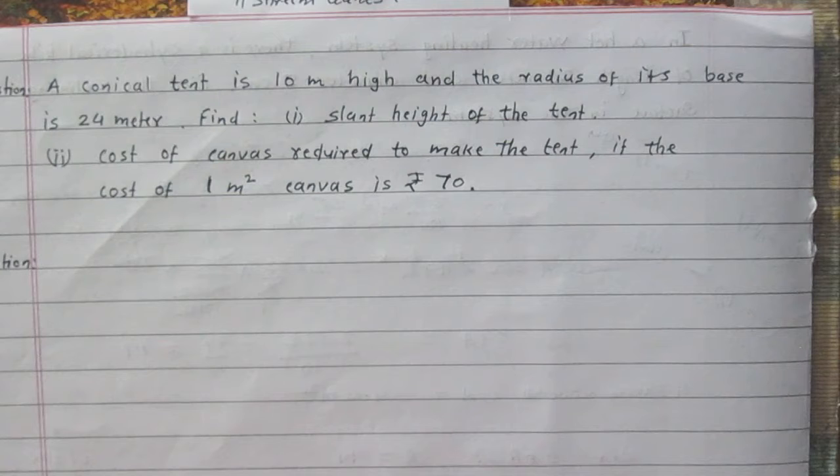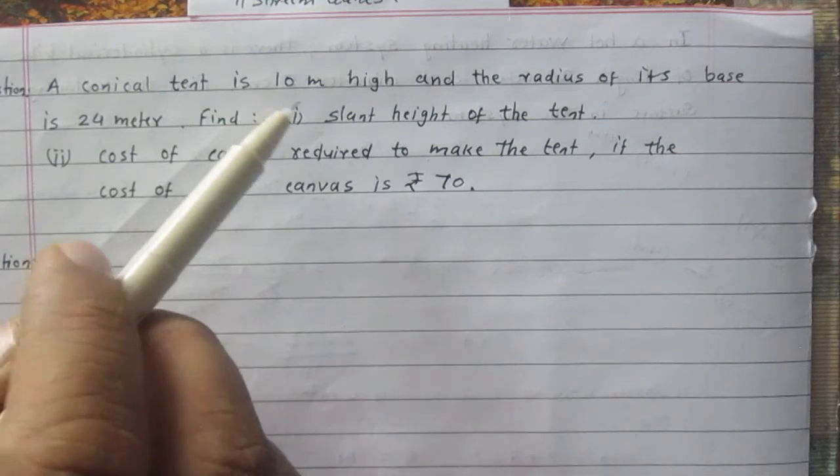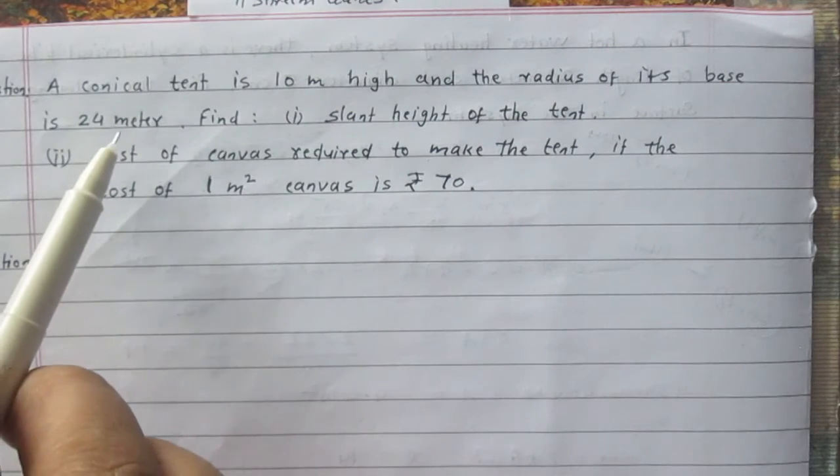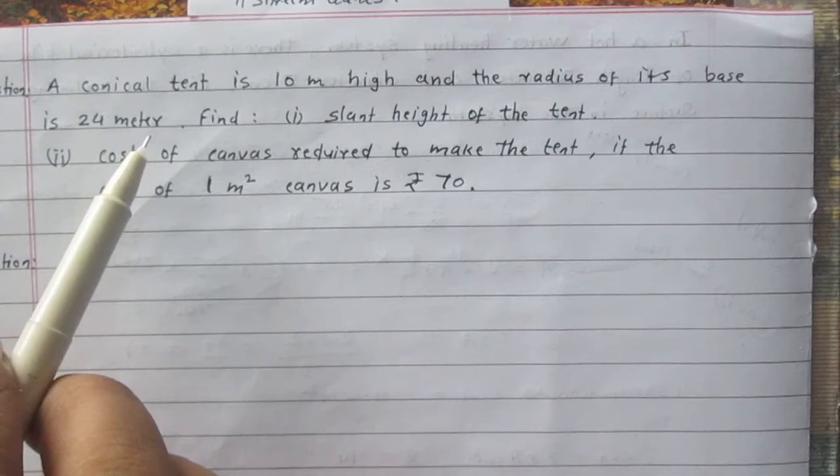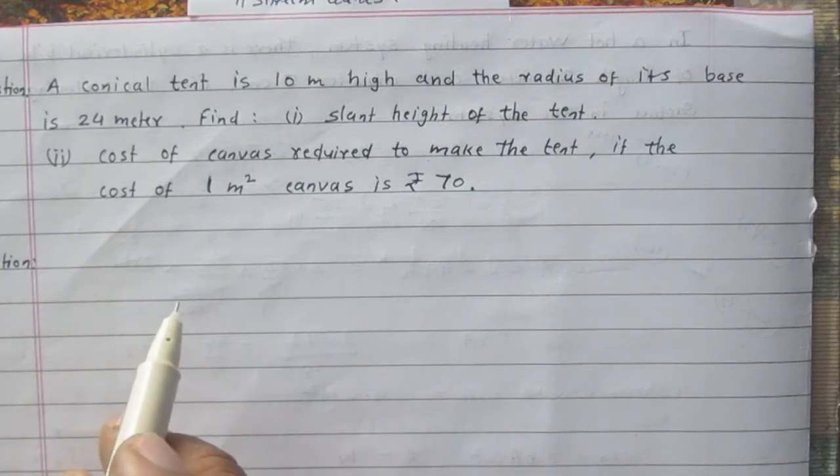We are given height of a conical tent and radius of the base. The height is 10 meter and radius of its base is 24 meter. And we are to find the slant height of the tent.